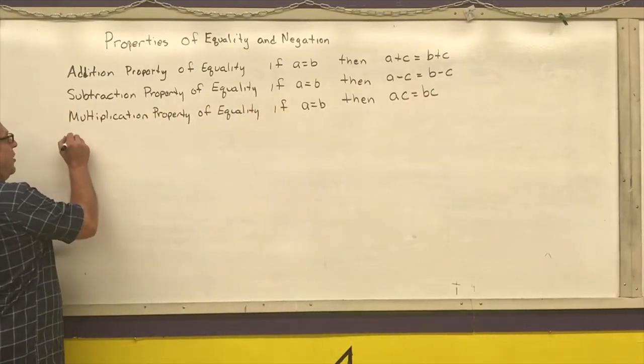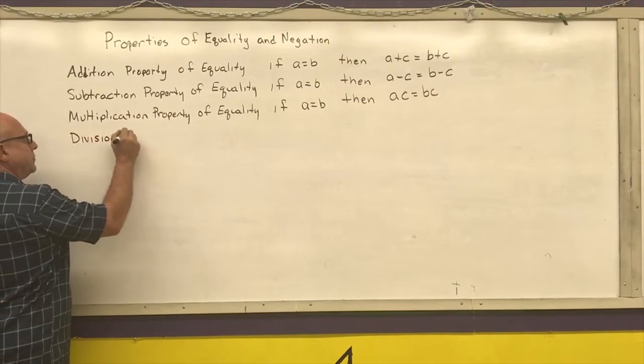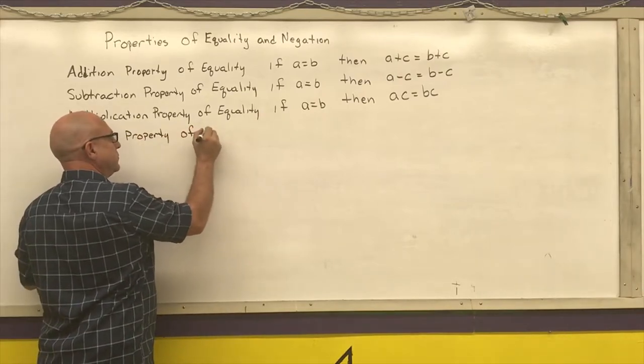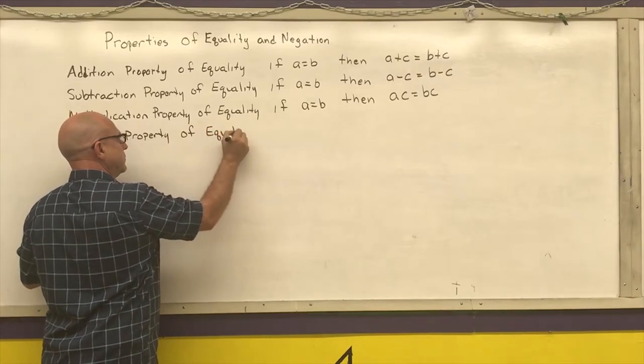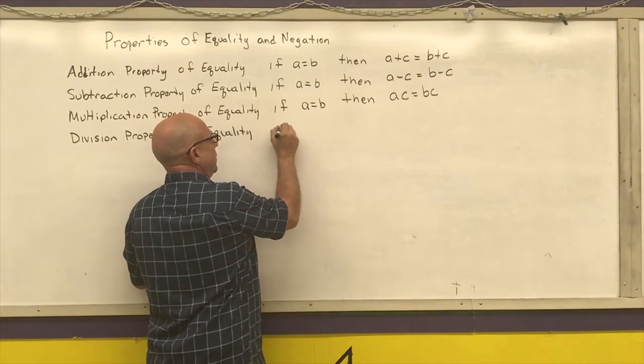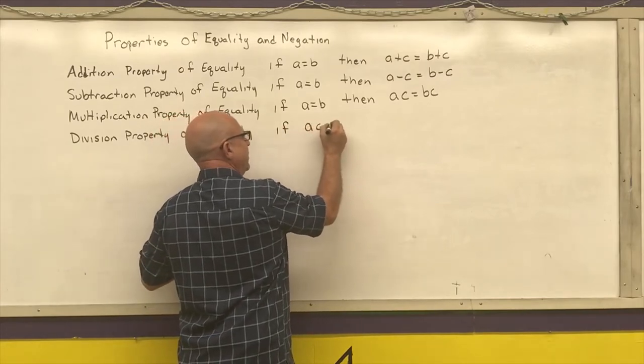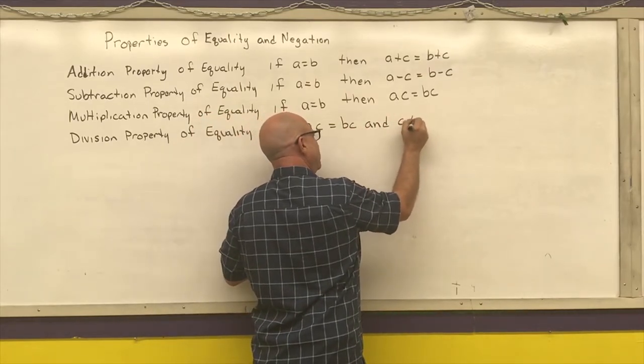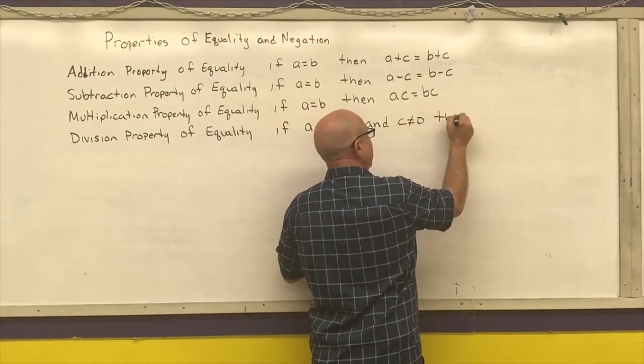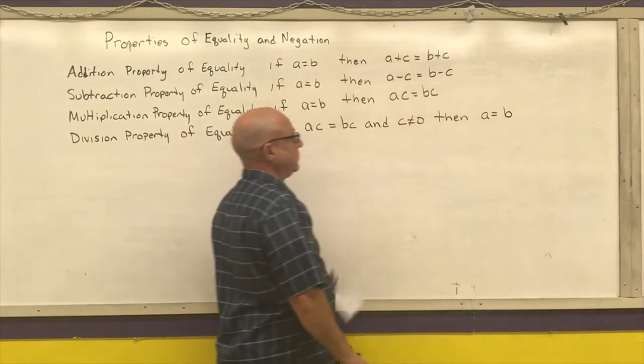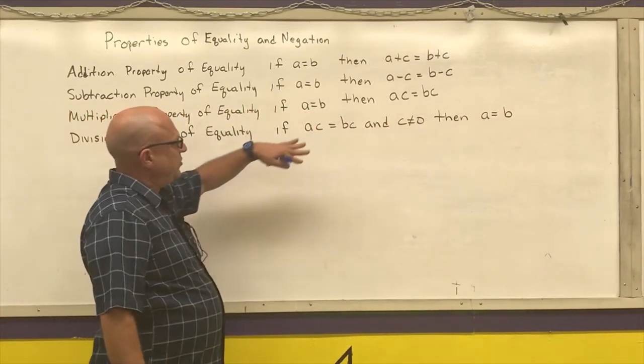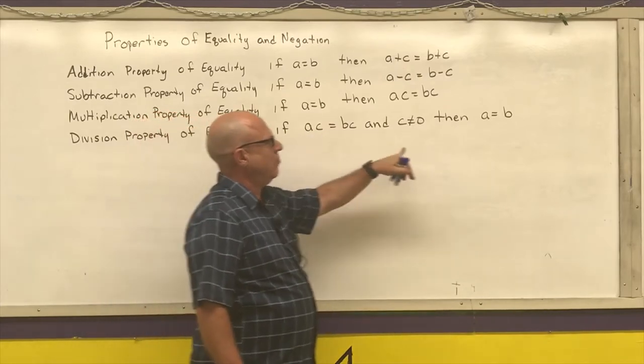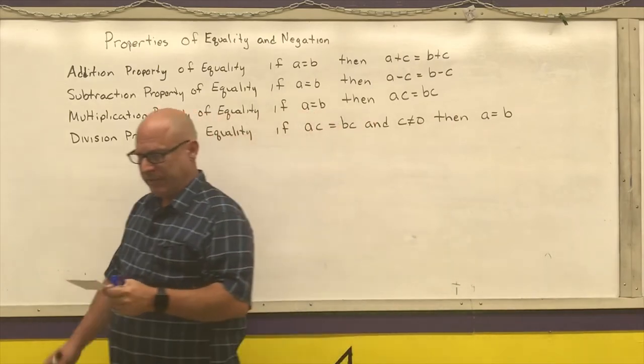And my division property of equality. If A is equal to B, and C is not equal to zero, then A divided by C is equal to B divided by C. What this is stating is if I have two things that are equal and divide both sides by the same number, I will still get a true sentence out of it.